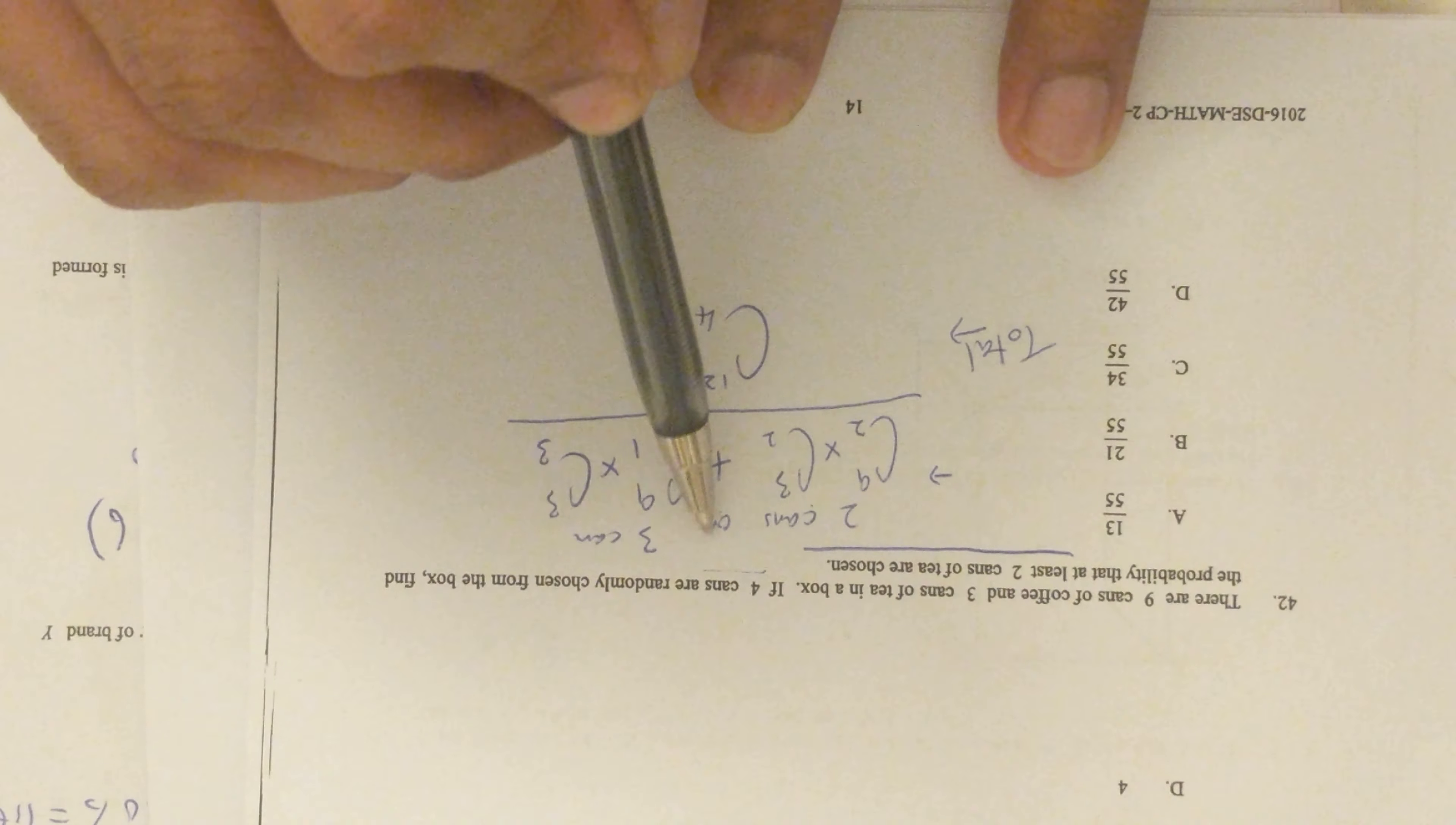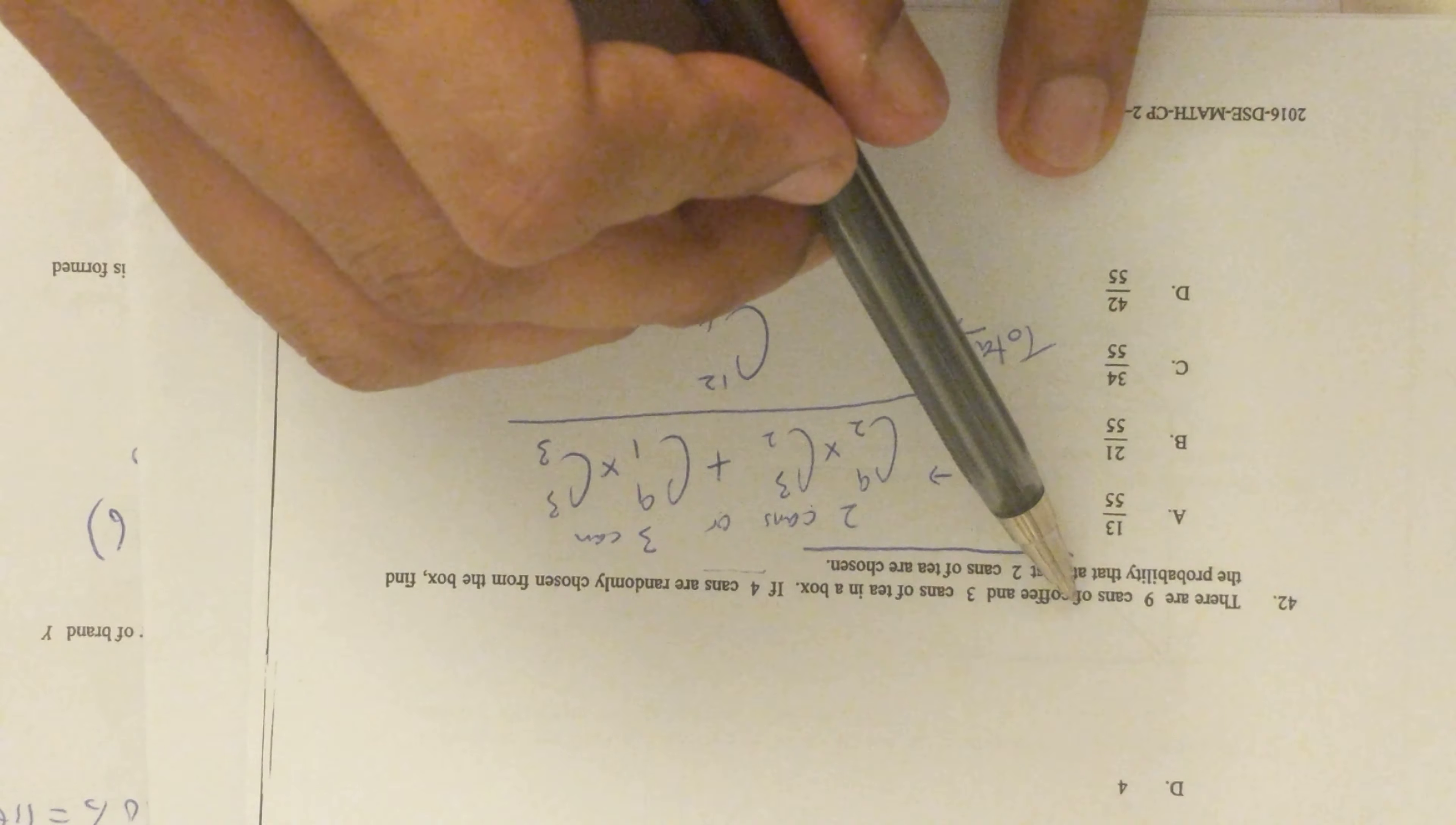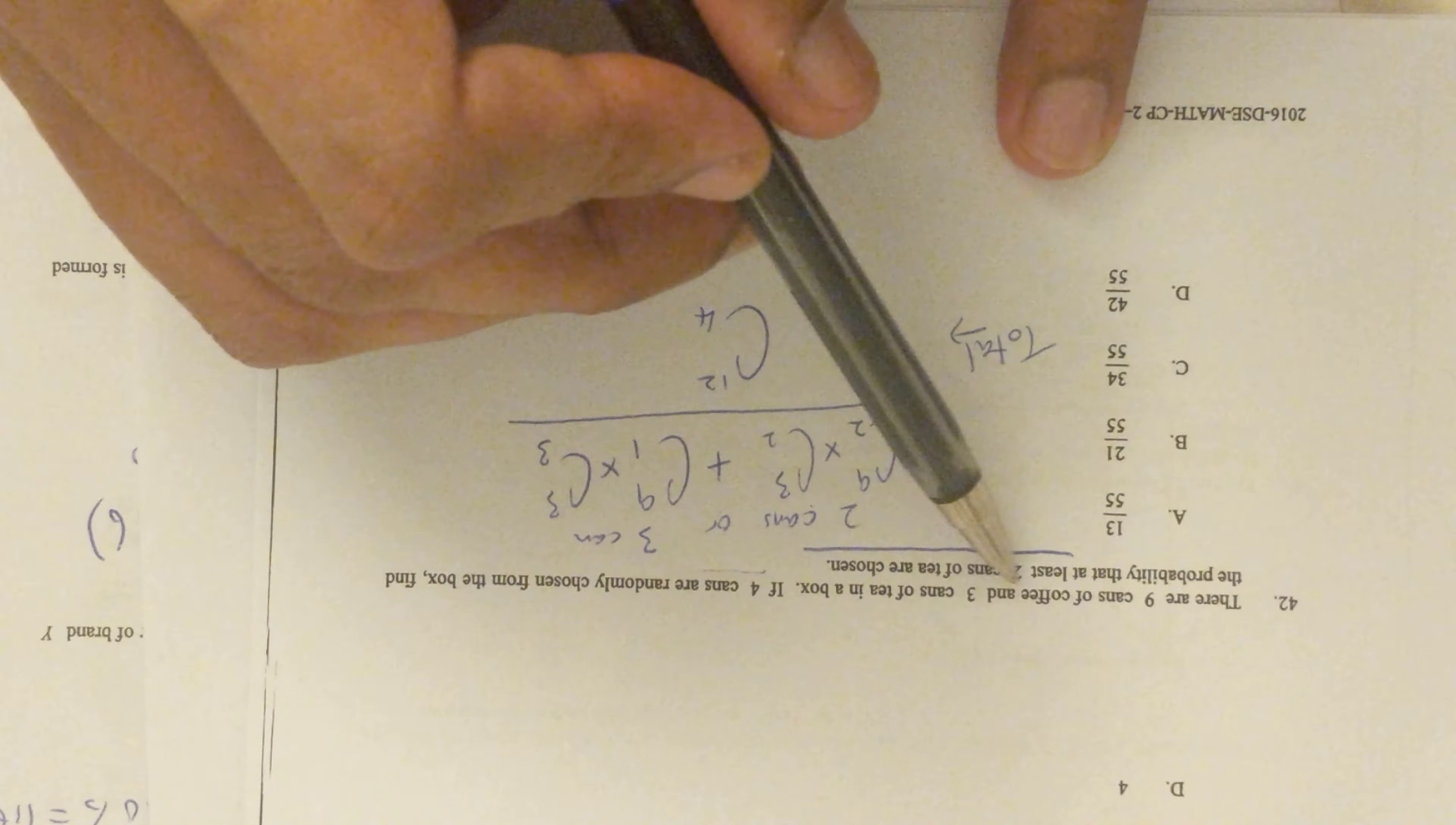If we're choosing two cans of tea, because we're choosing four cans altogether, two will be tea and two will be coffee. So we choose any two out of the nine coffees and multiply with three choose two for the teas.